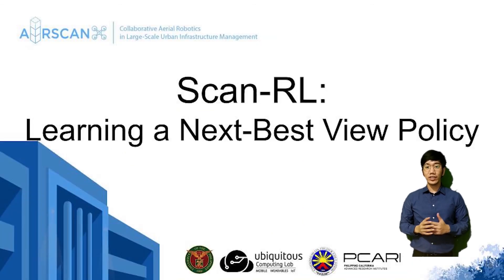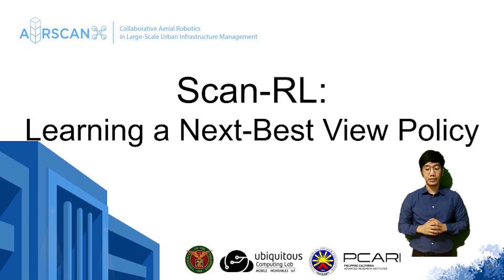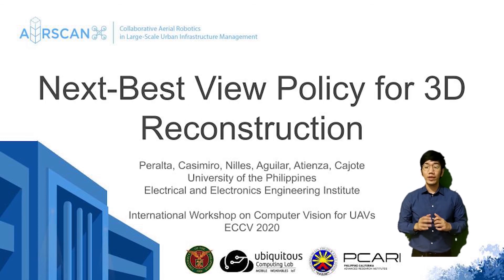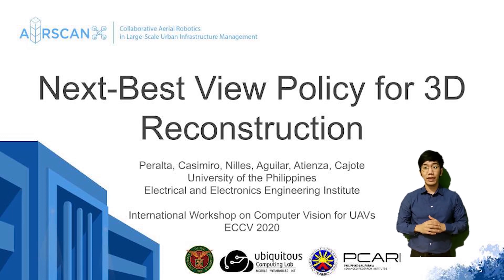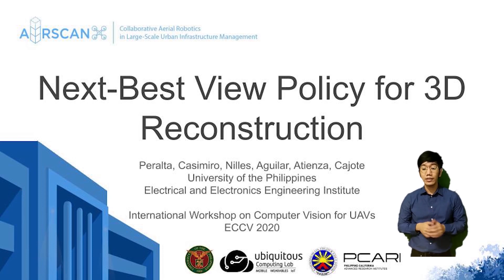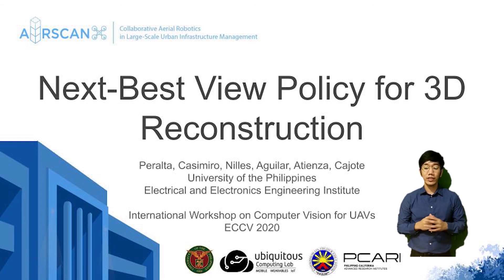In conclusion, ScanRL can train an NBV policy for 3D reconstruction inspired by how humans scan an object. We also created Houses3K, which can be used for future research. Our experiments showed that ScanRL trains an NBV policy to scan a house with fewer steps and shorter distance compared to the baseline circular path, and that a single policy can generalize to multiple houses including those not seen during training. The code and Houses3K dataset links can be found in our paper. Thank you for listening.